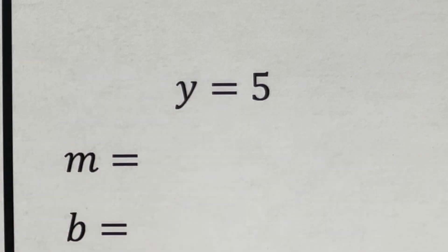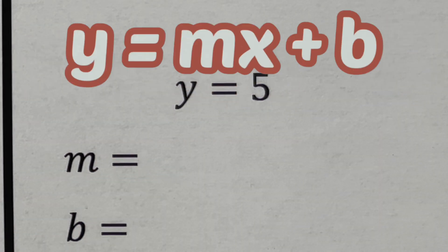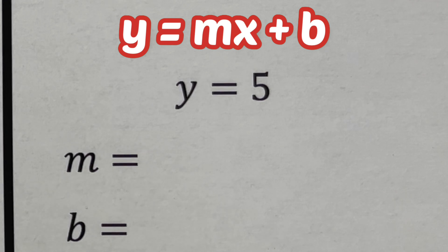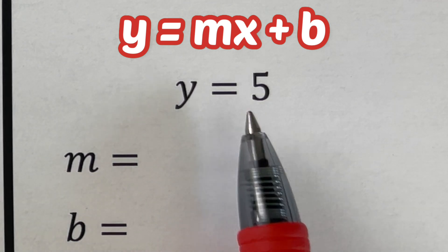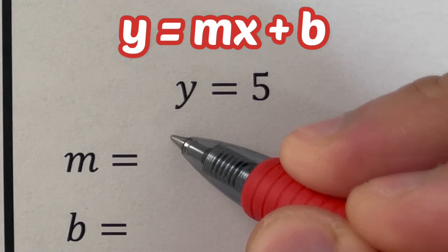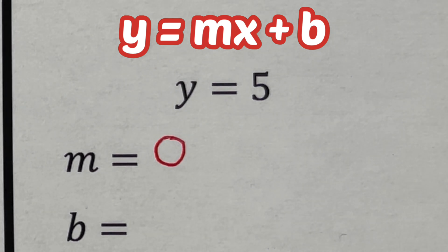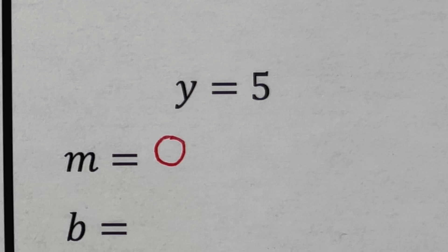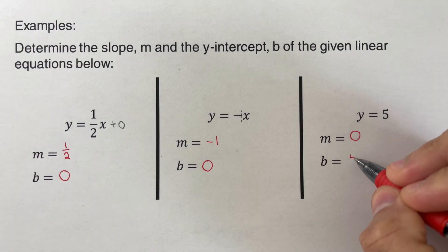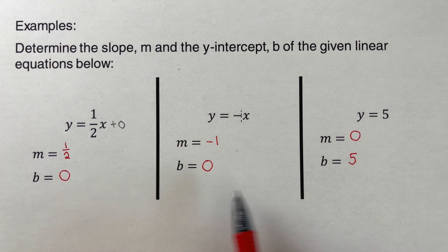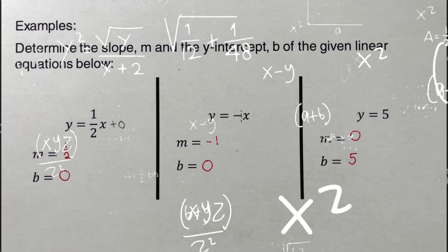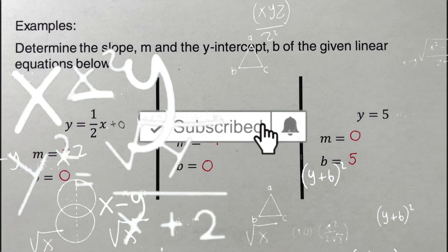The last equation is y = 5. There is no x variable in this equation at all. When x is absent, our m is zero. Make a distinction: no x means m = 0, while a lone x (with no written coefficient) means m is either positive 1 or negative 1 depending on the sign. Here, our b is 5, which is the y-intercept. Did you get the same answers? If you find this video helpful, hit like and subscribe for more math videos!